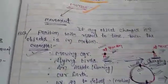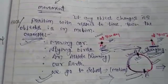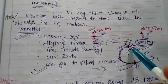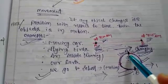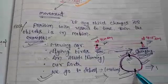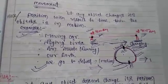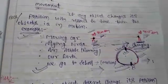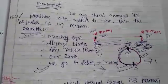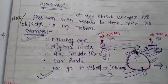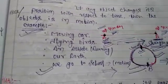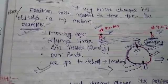Flying birds also change their position, so a bird is also in motion. Whenever any athlete runs in a circular track, the athlete also changes their position. Suppose initially the athlete is at position A and after some time at position B, so the athlete is in motion. Our earth rotates continuously, so our earth is also in motion. When we go to school, we start from our home and after some time reach the school, so we are also in motion.